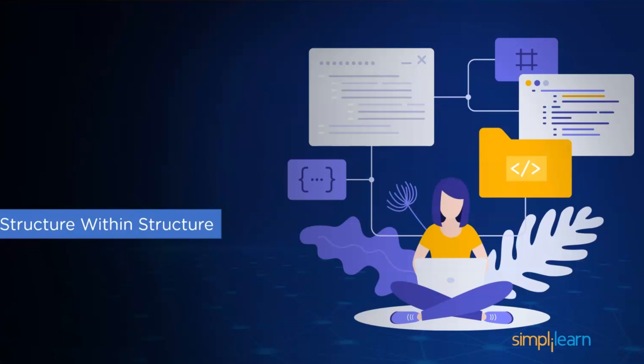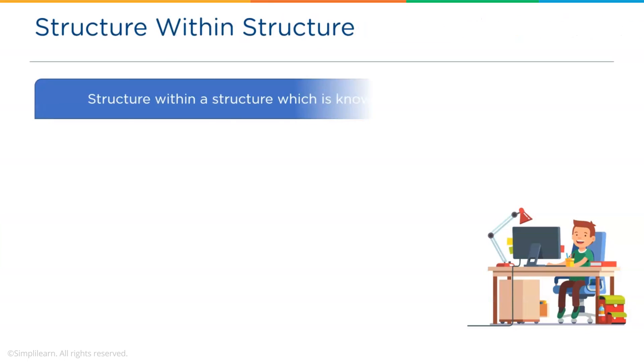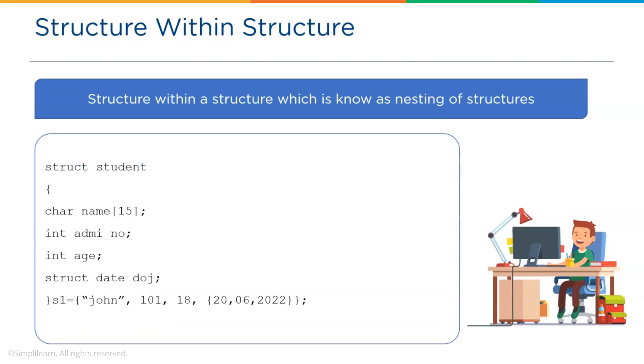Okay, so let us move on to the structure within structure in C. When a structure contains another structure as a member, it is known as a nested structure or structure within a structure. For example, let's consider a structure name student and another structure name as a date. In this example, a structure date as a member.